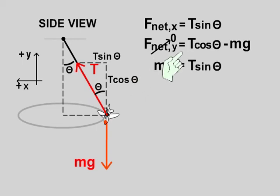And from the second equation for y, I'm going to bring the mg over to the left hand side and have mg equal T cosine theta.